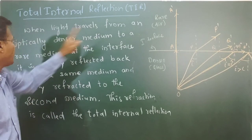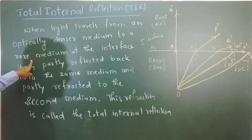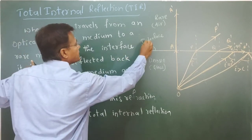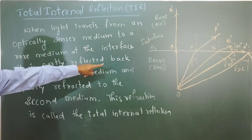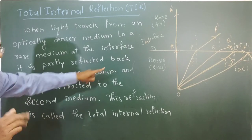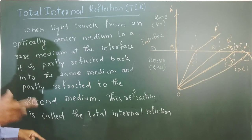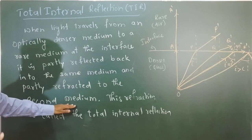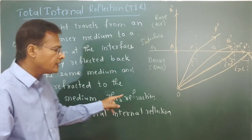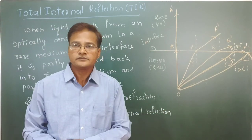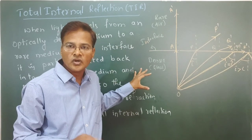When light travels from an optically denser medium to a rarer medium at the interface, it is partly reflected back into the same medium and partly refracted to the second medium. Only partly it goes to the second medium. This partial refraction leads to total internal reflection at greater angles. That is why this concept is kept in refraction, not in reflection — because partly it gets reflected and partly it gets refracted.